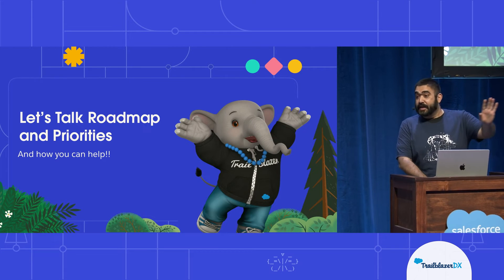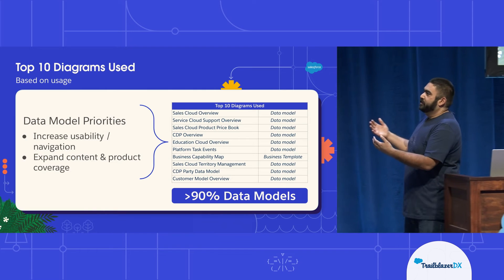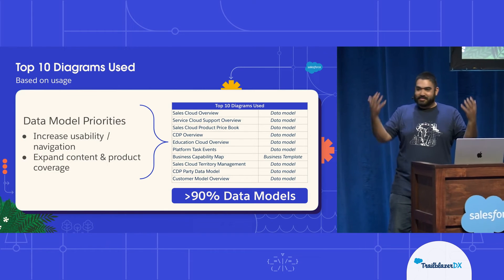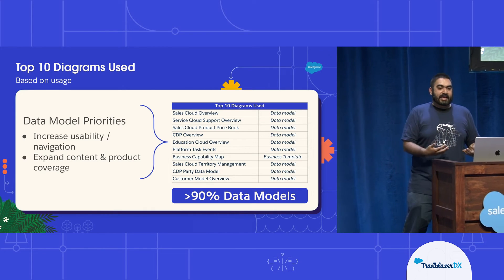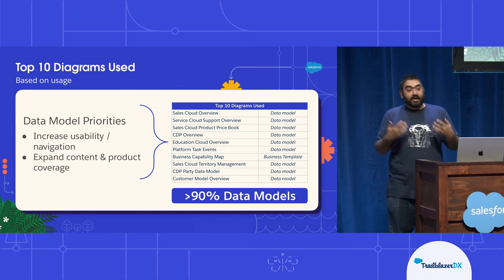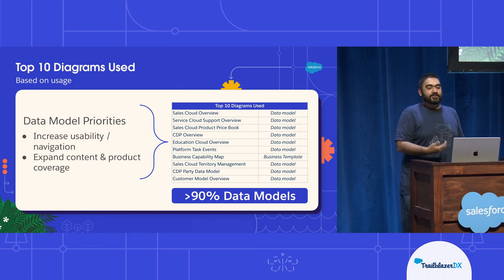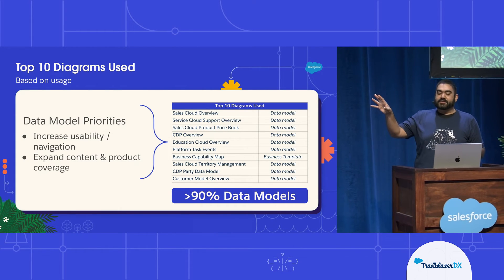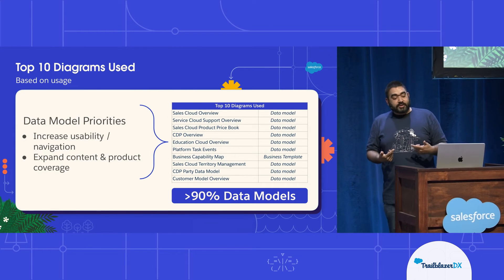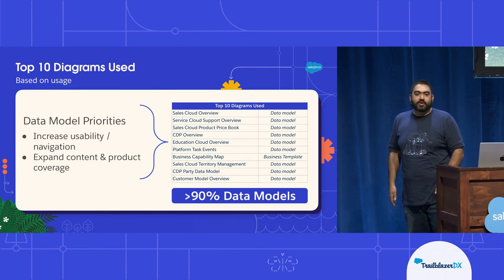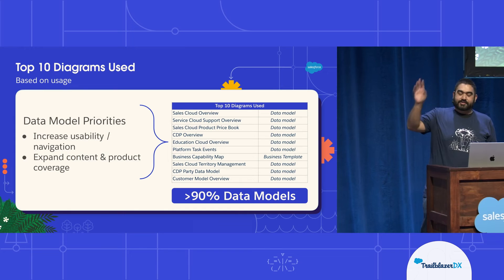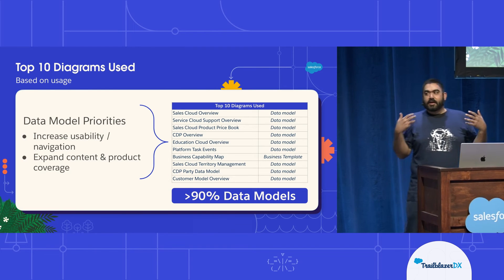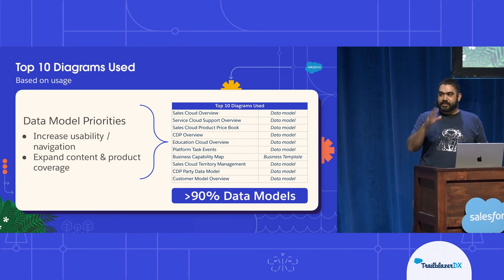Let's talk about roadmap, priorities, and how you can help. If people had to guess what the top 10 models used are - everybody loves data models. We talk about AI and data - we need the data first before we can do anything around artificial intelligence or large-scale data. Greater than 90% of diagram usage is data models. Our priority is increased usability and navigation - the current website has a lot of scrolling. We're going to add more data models, but also more filters and capabilities, like the filtering you see in our Patterns and Anti-Patterns Explorer.